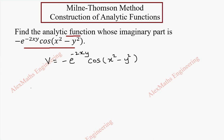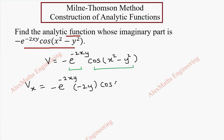As the first part, we are going to find vx, that is the partial derivative of v with respect to x. We are going to follow the product rule for these two terms. So the first term's derivative is minus e to the power minus 2xy, and by chain rule we differentiate the power. Since we differentiate with respect to x, minus 2y is a constant, so that will come out.